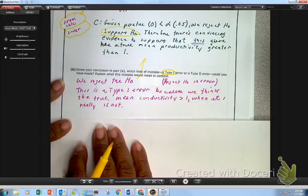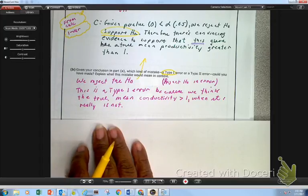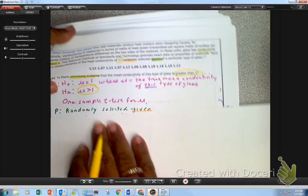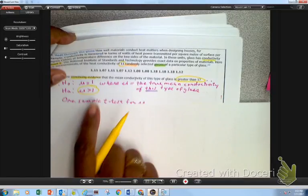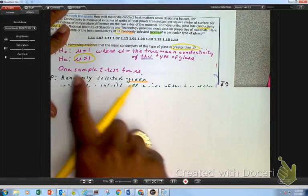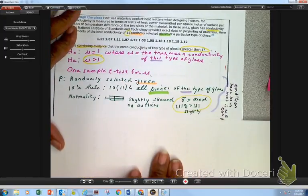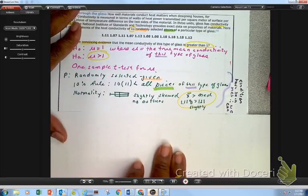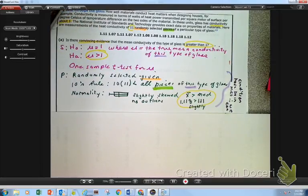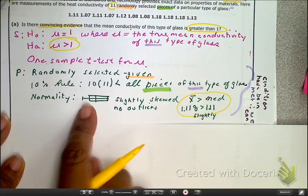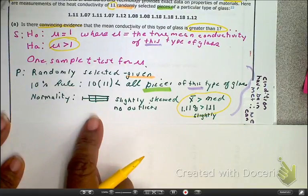So, TTFN, ta-ta for now. And I shouldn't have said that yet because I just want to remind you, what was different in this? Well, what's different is, I'm looking at mu instead of P. What's different here is a one-sample T for mu.